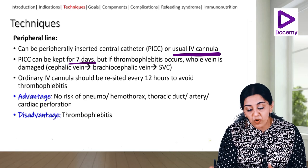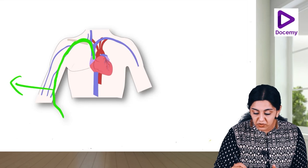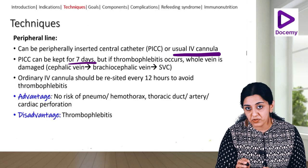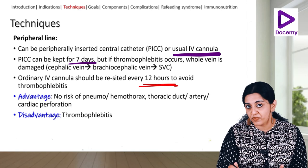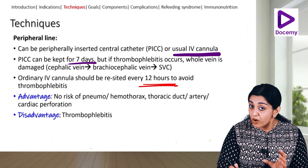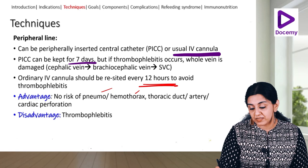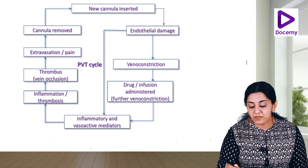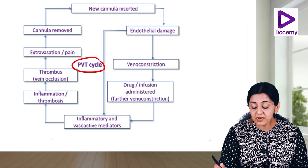If thrombophlebitis occurs with a PICC line, the whole vein from the cephalic or basilic vein up to the superior vena cava is damaged. An ordinary peripheral cannula must be resited every 12 hours to avoid thrombophlebitis. The advantage of a peripheral line is that there is no pneumothorax, hemothorax, thoracic duct injury, artery injury, or cardiac perforation unlike central lines. The disadvantage is thrombophlebitis.